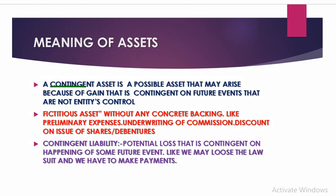Contingent means something that may or may not happen. A contingent asset is a possible asset that may arise because of a gain contingent on a future event not under the entity's control, and accounting does not recognize them. Fictitious assets have no real backing — examples include preliminary expenses, underwriting commission, and discount on the issue of shares and debentures. A contingent liability is a potential loss contingent on a future event, such as losing a lawsuit and having to make a payment or penalty.